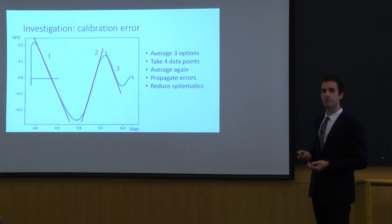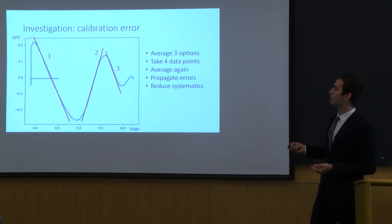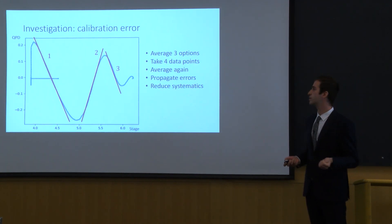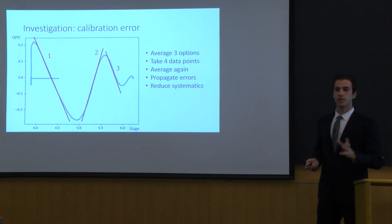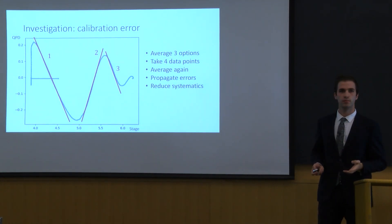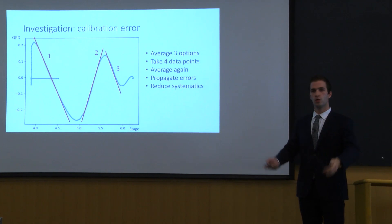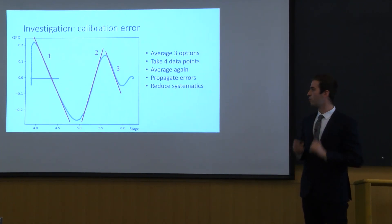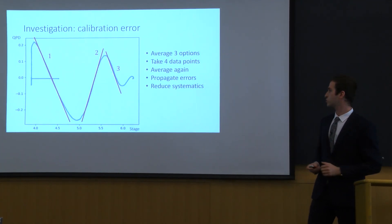Okay now let's do our investigation. The first one is about the calibration. As you can see all of these slopes should be valid but they're actually not. So what we do is we take them into account, we average them, then we take more data points, we average again, and then we propagate errors in order to reduce the systematics.